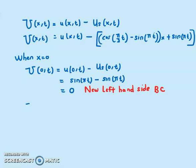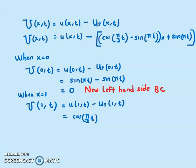For the right-hand side, when x = 1, U(1,t) = u(1,t) − u_s(1,t) = cos(π/2 · t) − [cos(π/2 · t) − sin(πt) + sin(πt)] = 0. So the new right-hand side boundary condition is also zero.